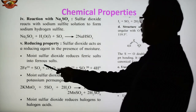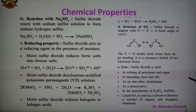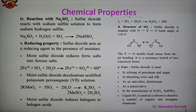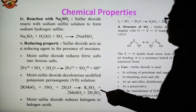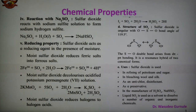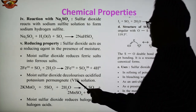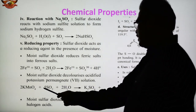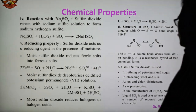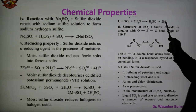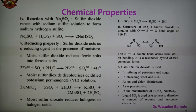Sulphur dioxide acts as a reducing agent. SO2 reduces ferric salt (Fe3+) to ferrous salt (Fe2+). Moist sulphur dioxide decolorizes acidified potassium permanganate — KMnO4 reacts with SO2 forming K2SO4 and MnSO4, where manganese goes from +7 oxidation state to +2. Moist sulphur dioxide also reduces halogens to halogen acids — iodine is converted to iodide.